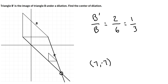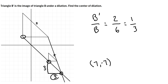Another way to say that is that B is three times larger than B'. So we can go from the center of dilation we just identified and go to any corner of B'. Let's take this bottom left corner — we'd have to go three to the left and three up. Because B is three times larger than B', we should have to go three times that distance. Three times three is nine, so let's go nine to the left.